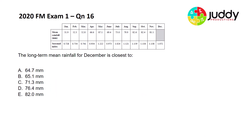2020 Further Maths exam number 1, question 16. This question states: the long-term mean rainfall for December is closest to — with a range of options A through E. To calculate the December long-term mean rainfall we need to use other data involving both rainfall and a seasonal index.